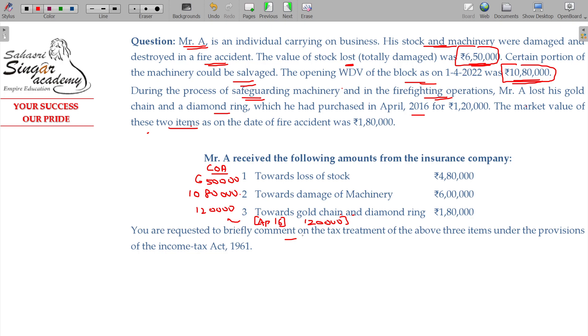You are requested to briefly comment. Stock, loss of stock 4 lakhs 80. The claim under 480. The stock will be PGBP. That will be PGBP, claim received 480 minus cost of acquisition 6 lakhs 50. The difference between these two PGBP.